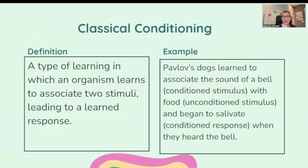Let's start with classical conditioning. It's a good place to start considering that's the name of the section. Classical conditioning is a type of learning in which an organism learns to associate two stimuli, leading to a learned response. For example, Pavlov's dog learned to associate the sound of a bell — the conditioned stimulus — with food — the unconditioned stimulus — and began to salivate, the conditioned response, when it heard the bell.